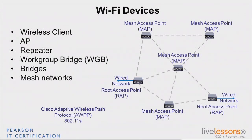So Cisco networks today in mesh use AWPP. The industry may start to adopt 802.11s widely, perhaps through Wi-Fi Alliance certification, and when that day comes, maybe Cisco will change from AWPP to 802.11s. But until then, in a Cisco network, AWPP is the protocol you find in mesh networks.